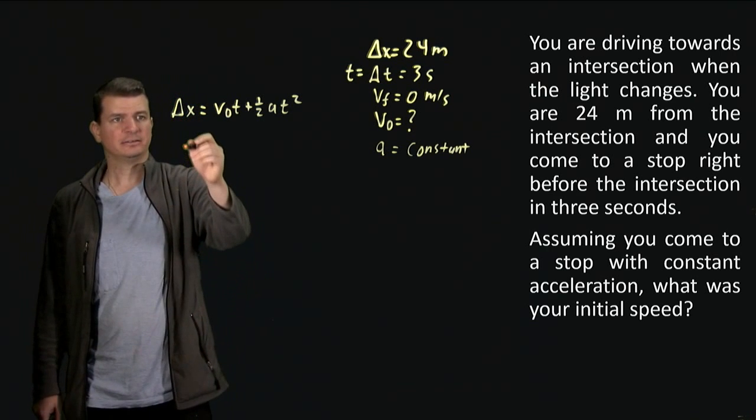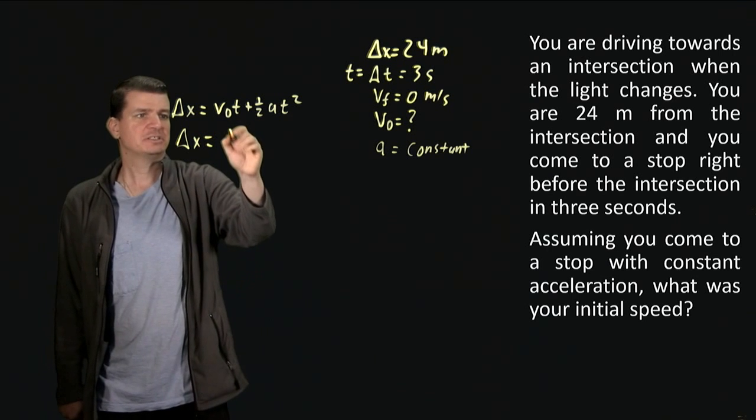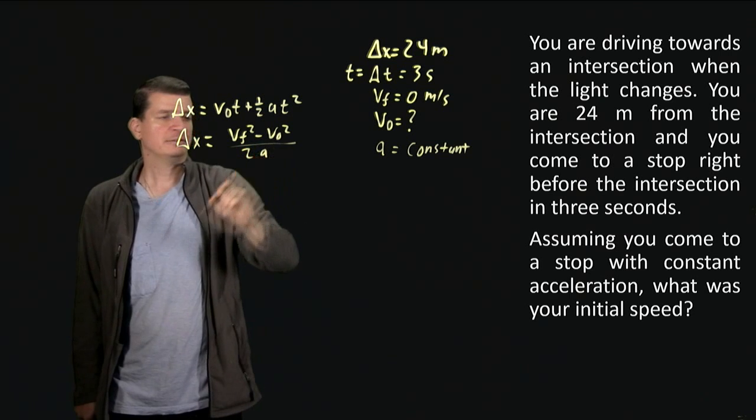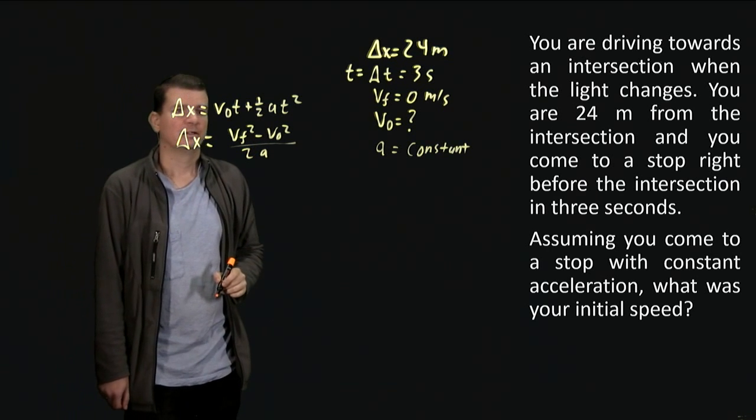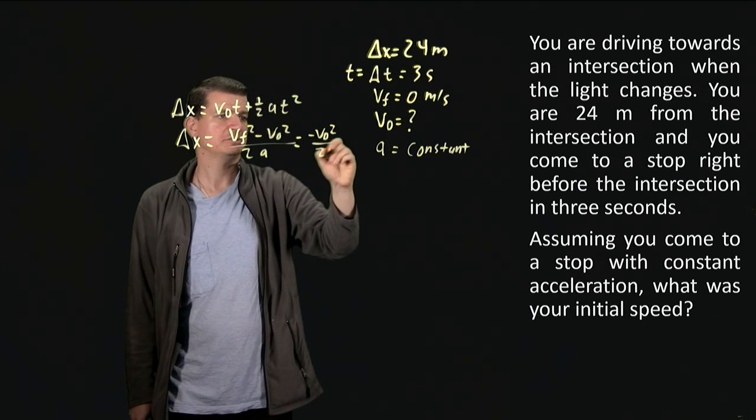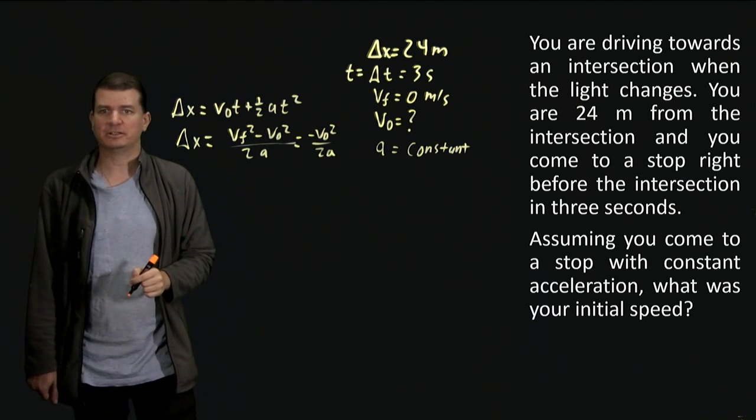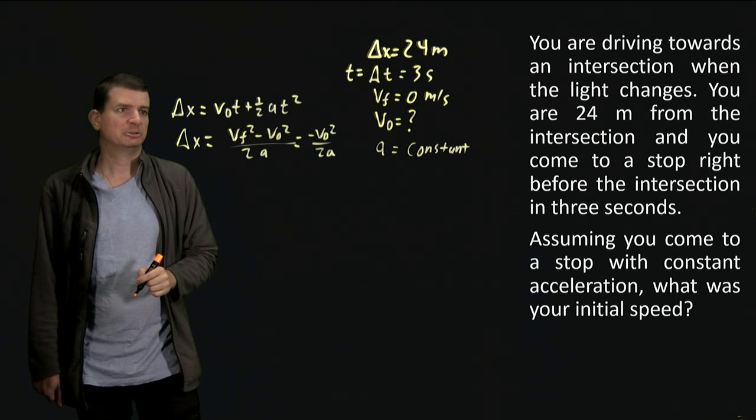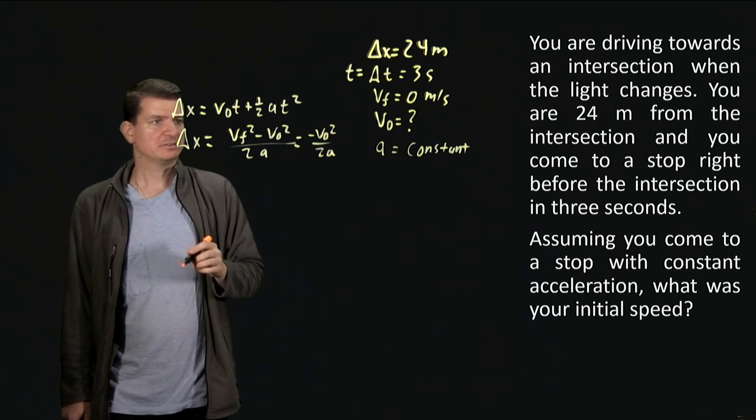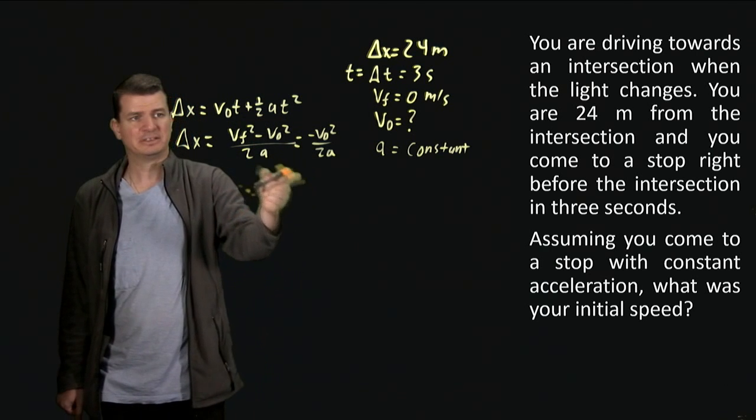That looks like a dead end. What else do we know? Well, we know another delta x one which says that it's vf squared minus v zero squared divided by 2a, which is cool. That turns into minus v zero squared over 2a, but uh oh, that again involves the two unknowns a and v zero, so who knows what that thing is. It's not at all clear because we don't know a, we don't know v zero. That's not going to help us.